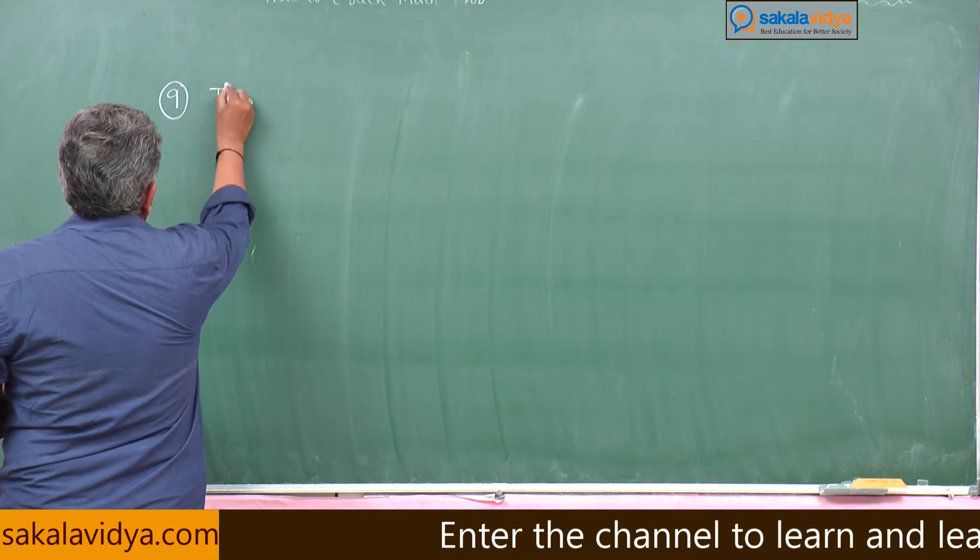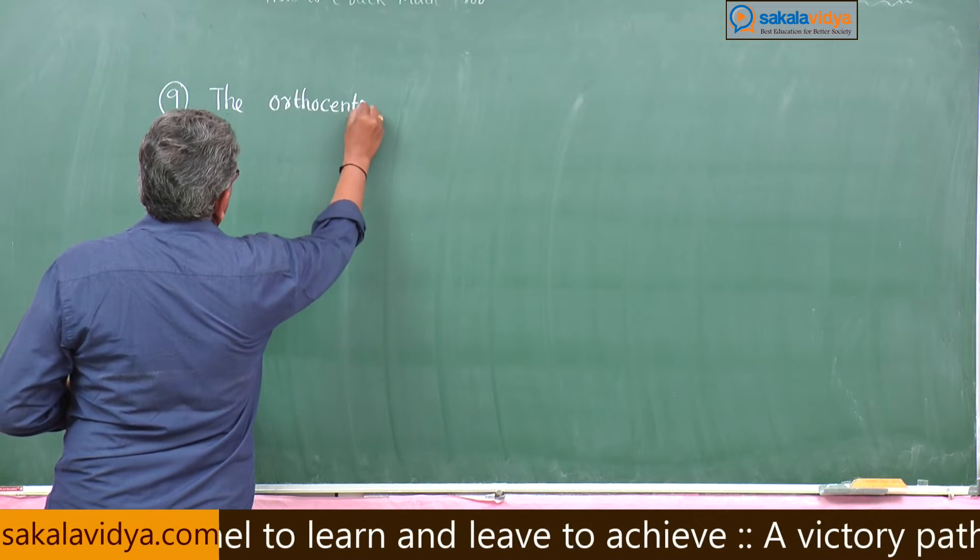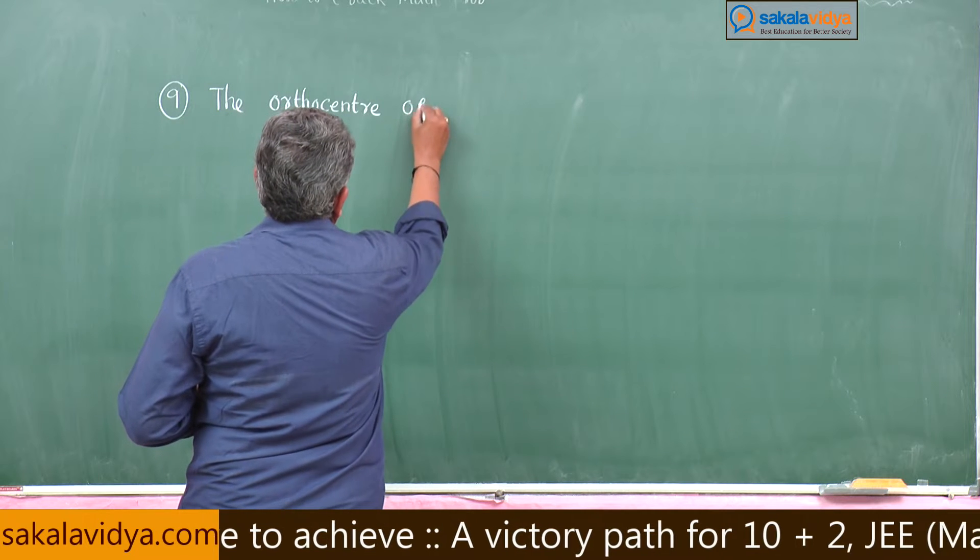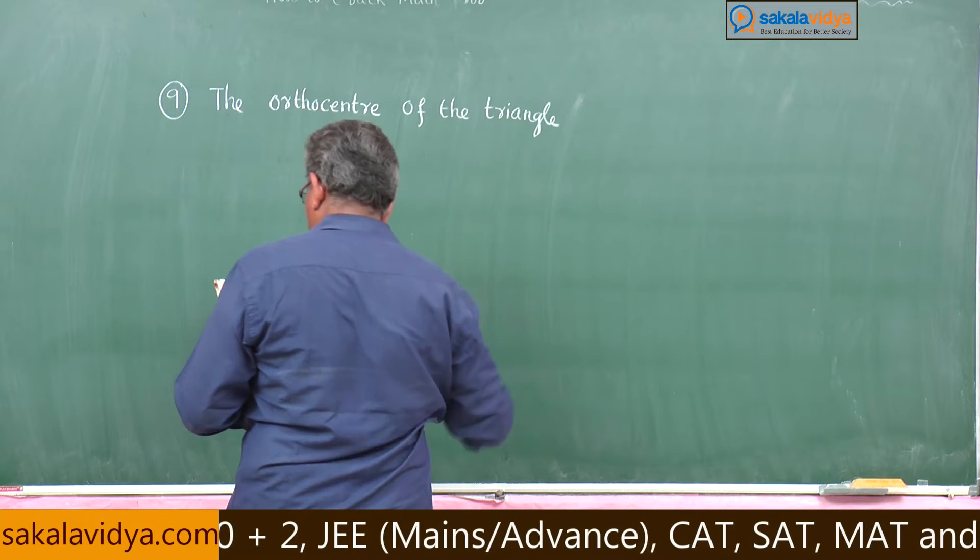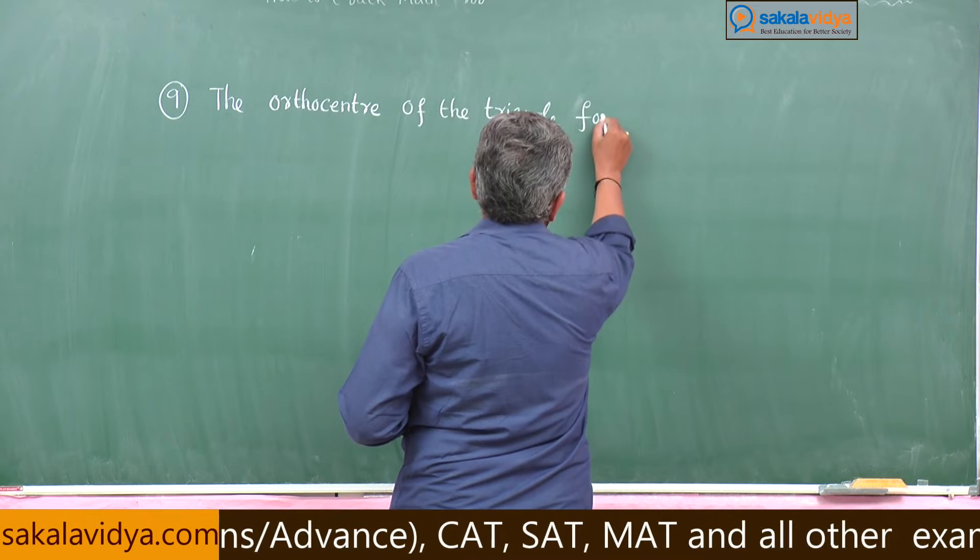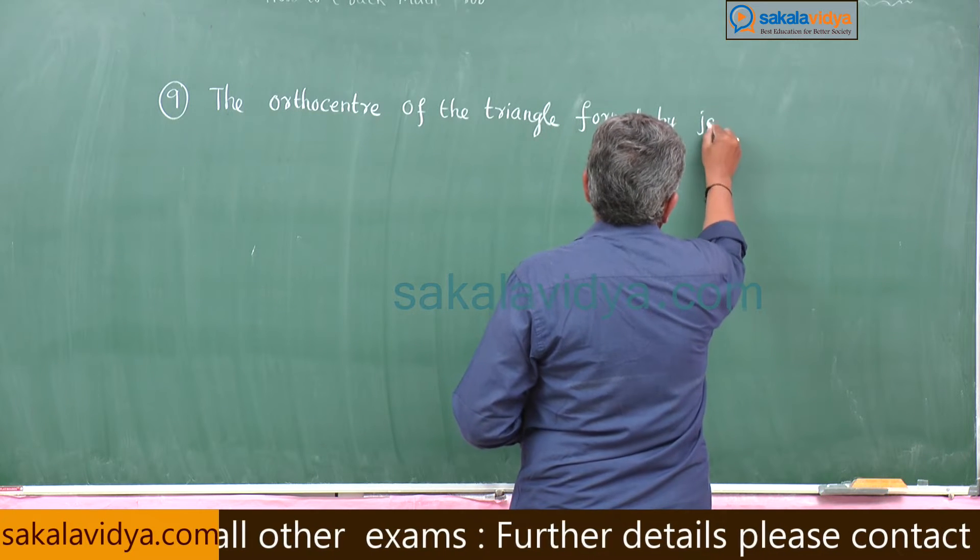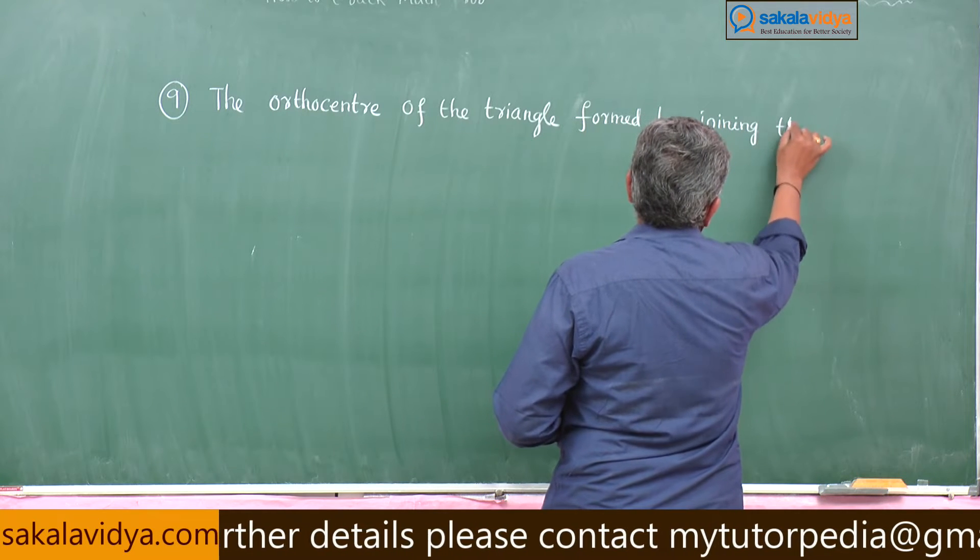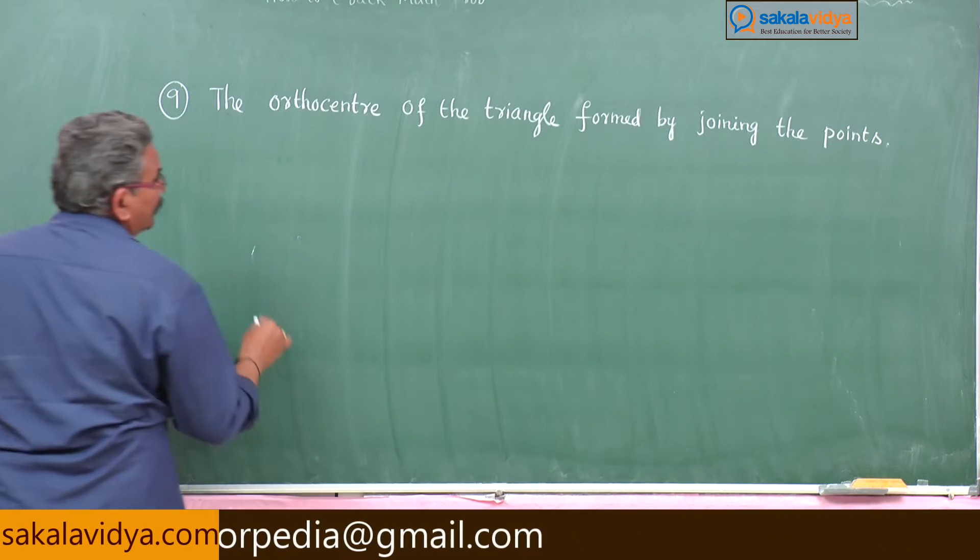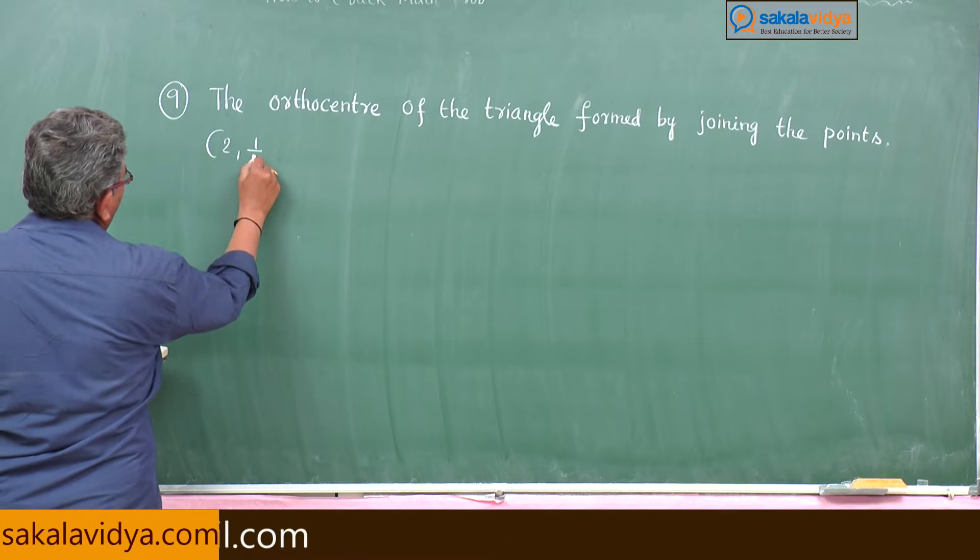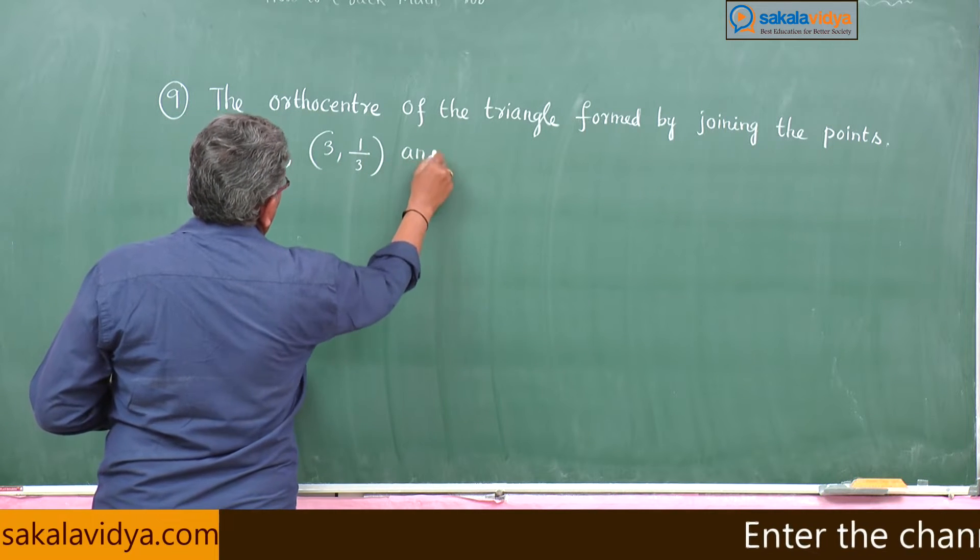The orthocenter of the triangle formed by joining the points: 2 comma 1 by 2, 3 comma 1 by 3, and 4 comma 1 by 4.